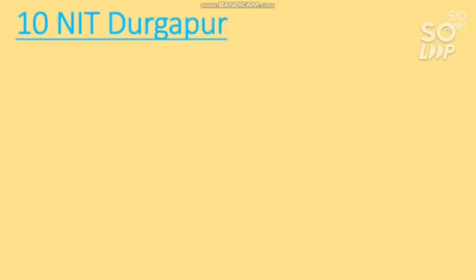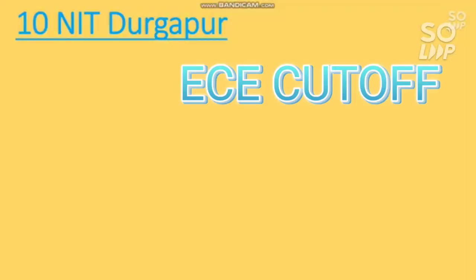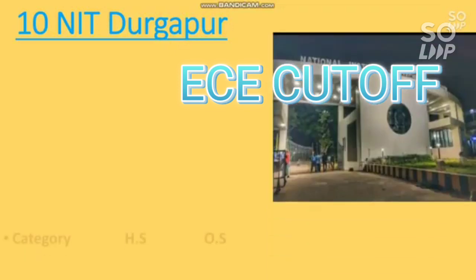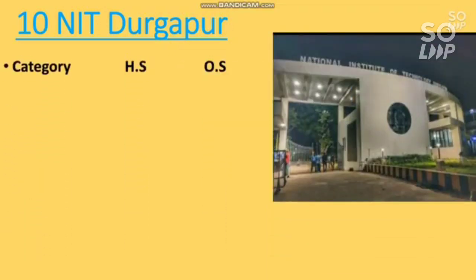Let's start this video. Number 10 NIT is NIT Durgapur. Here is the EC branch cutoff — home state and other state, category wise. For General, if you are from home state you need to score at least 98 percentile to get EC branch in NIT Durgapur.